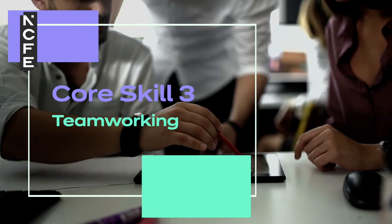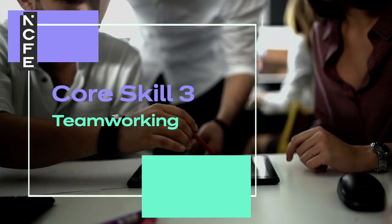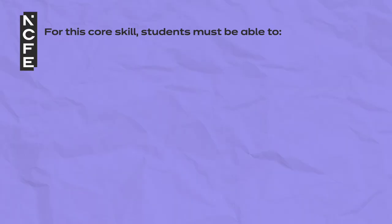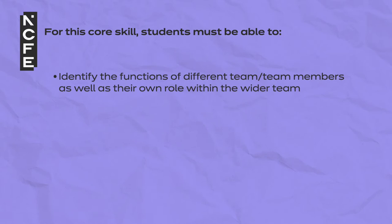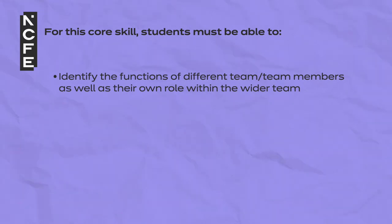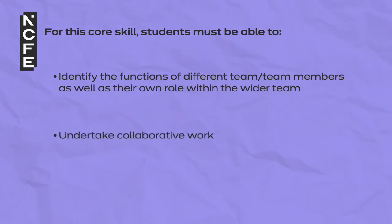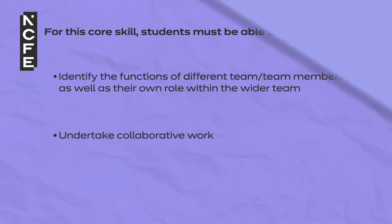Core skill 3 – Team working. For this core skill, students must be able to identify the functions of different teams or team members as well as their own role within the wider team, and undertake collaborative work. More detailed information can be found within the core skills section of the health qualification specification.